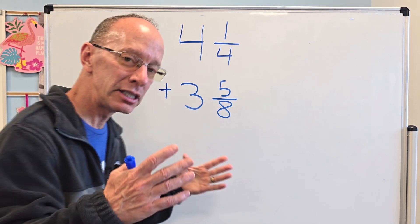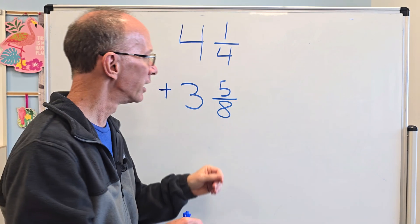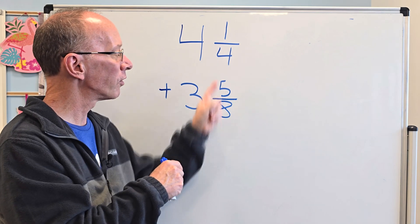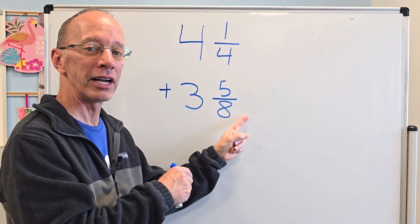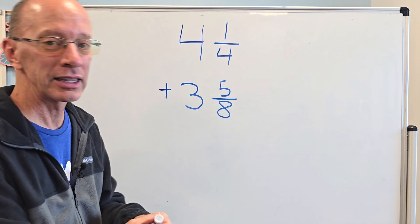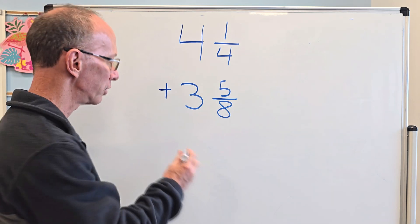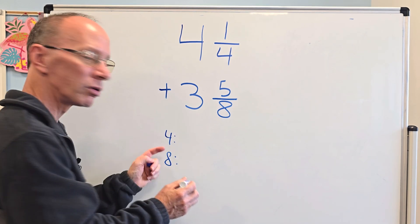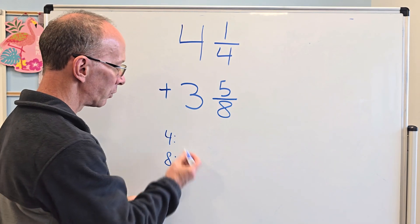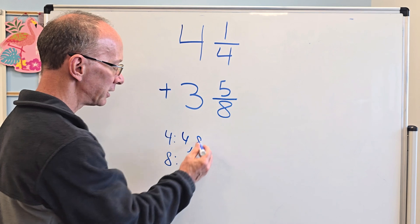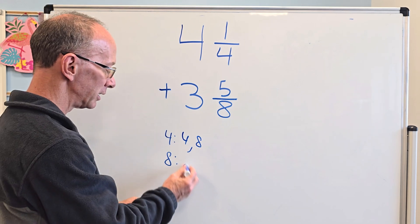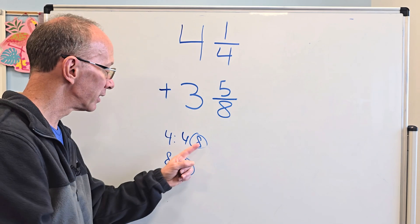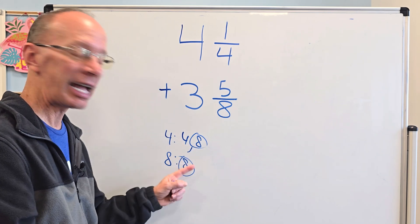Now, as you get more experience doing this, right away you can just kind of see what's going to work out. I know that both of them can use the multiples of 8. But otherwise, if you want to find the least common multiple, you could always just write out 4 and 8 right here and then do multiples of 4. So 4 times 1 would be 4, 4 times 2 is 8. And then 8 times 1 here is 8. You can see right here that the least common multiple they both share in common is 8.